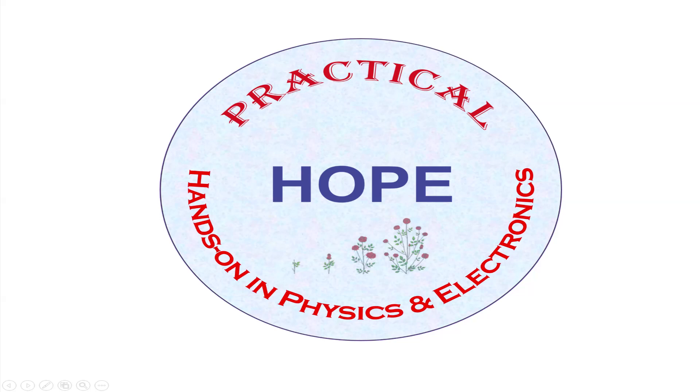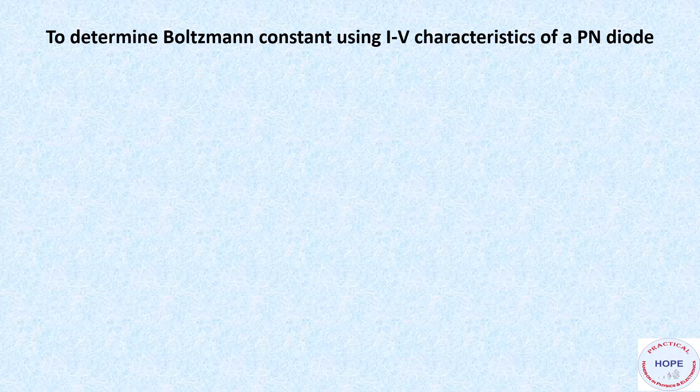Hello friends and welcome to another video of the series Practical Hands-On in Physics and Electronics. In this video, we will see how to determine Boltzmann constant using IV characteristics of a p-n junction diode.